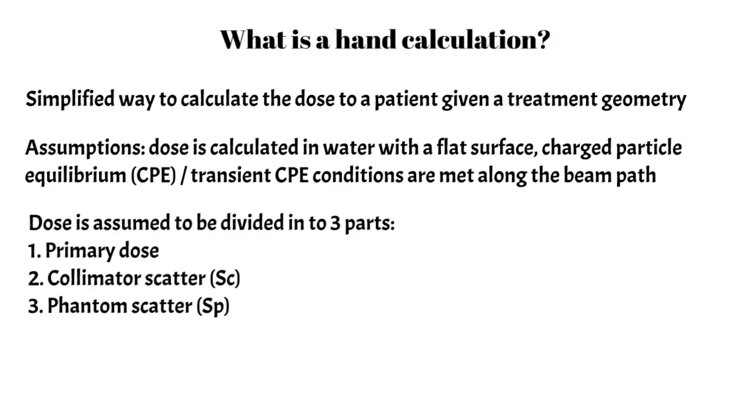In addition to those assumptions, the dose is assumed to be divided into three parts. You have contribution from primary dose, you also have contribution from the collimator scatter, which you account for with the collimator scatter factor, and you also get contribution from the phantom scatter factor, which you account for with the phantom scatter factor.